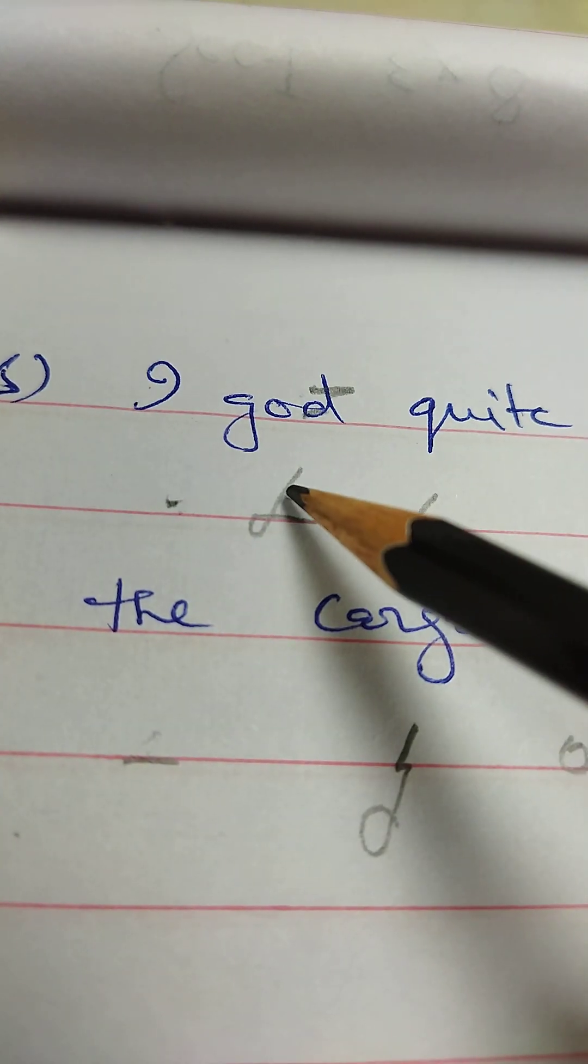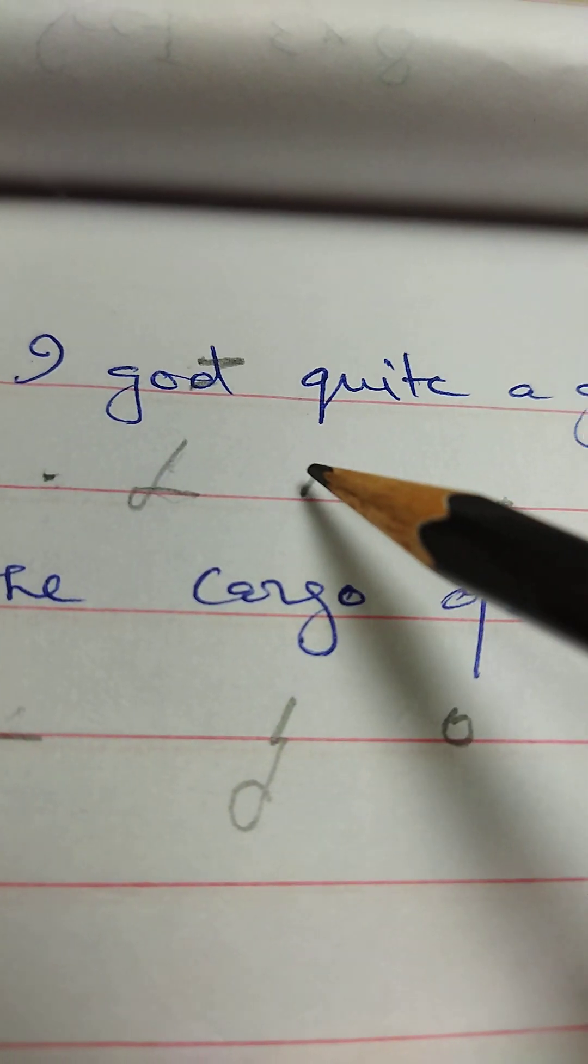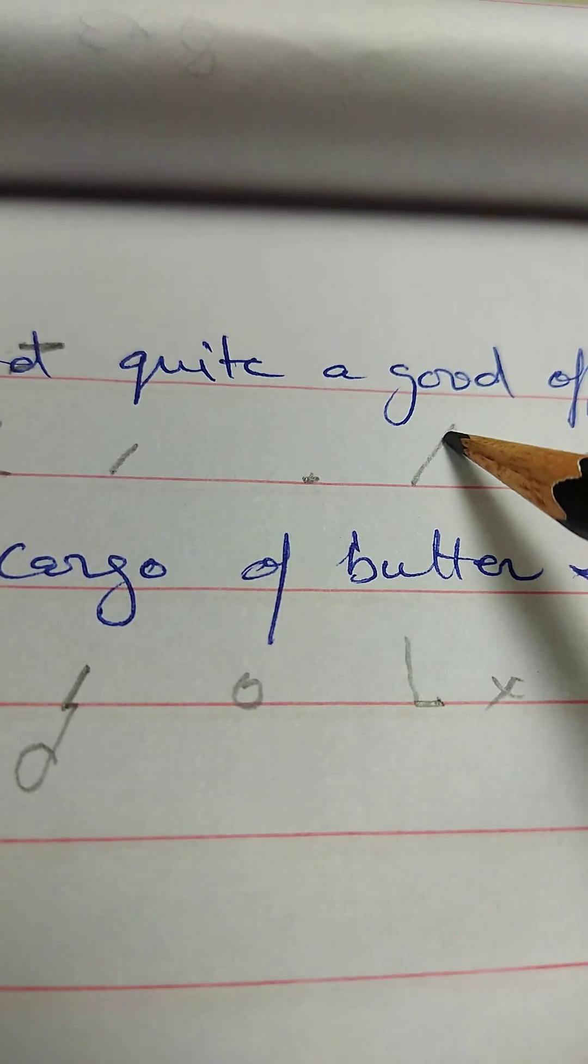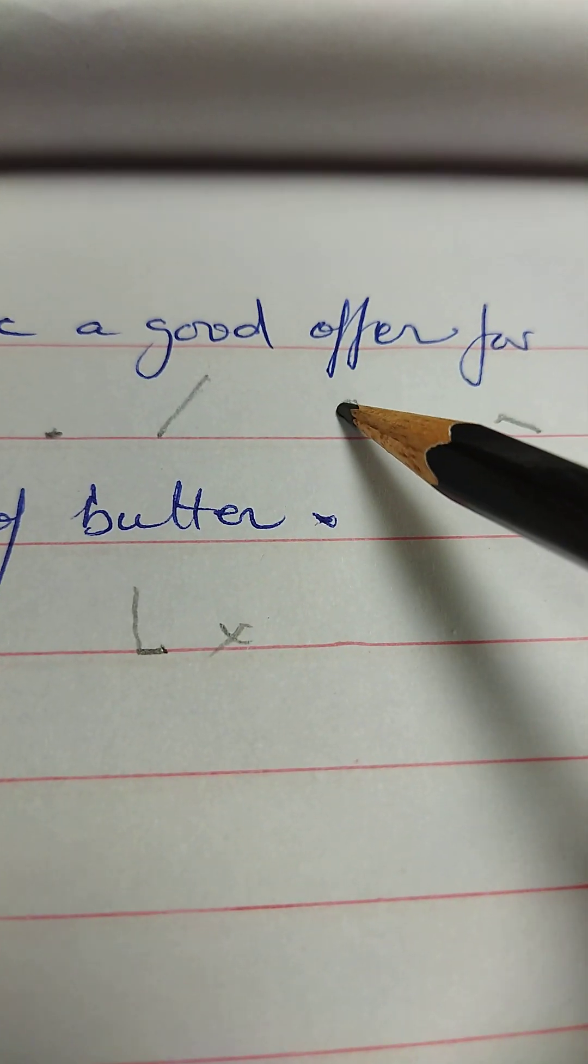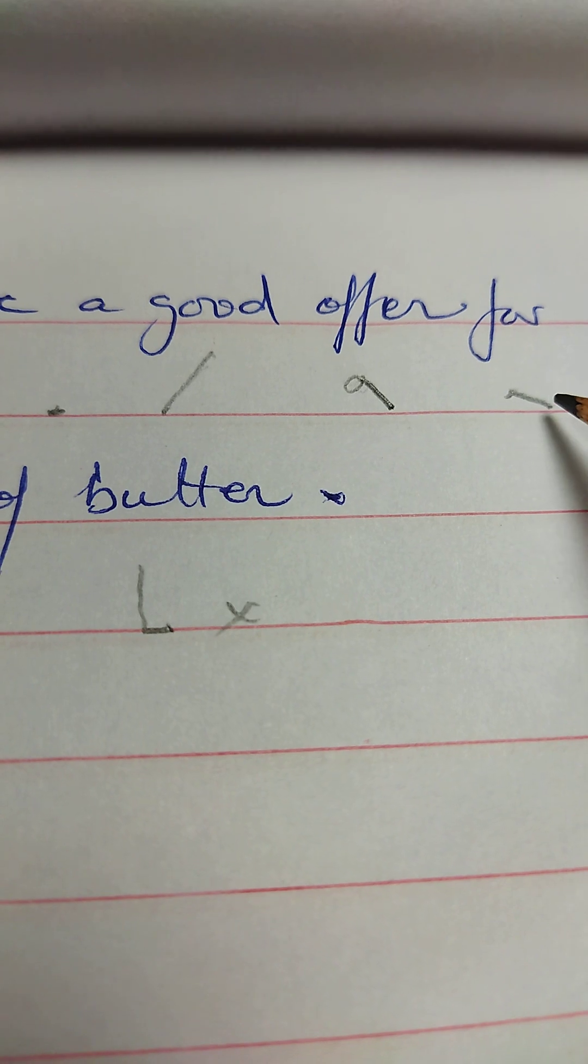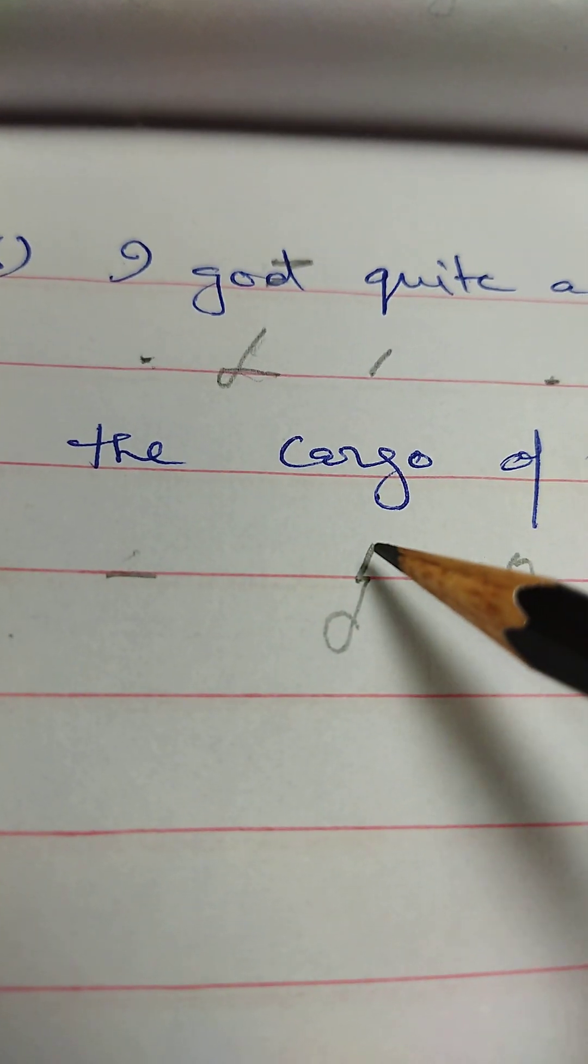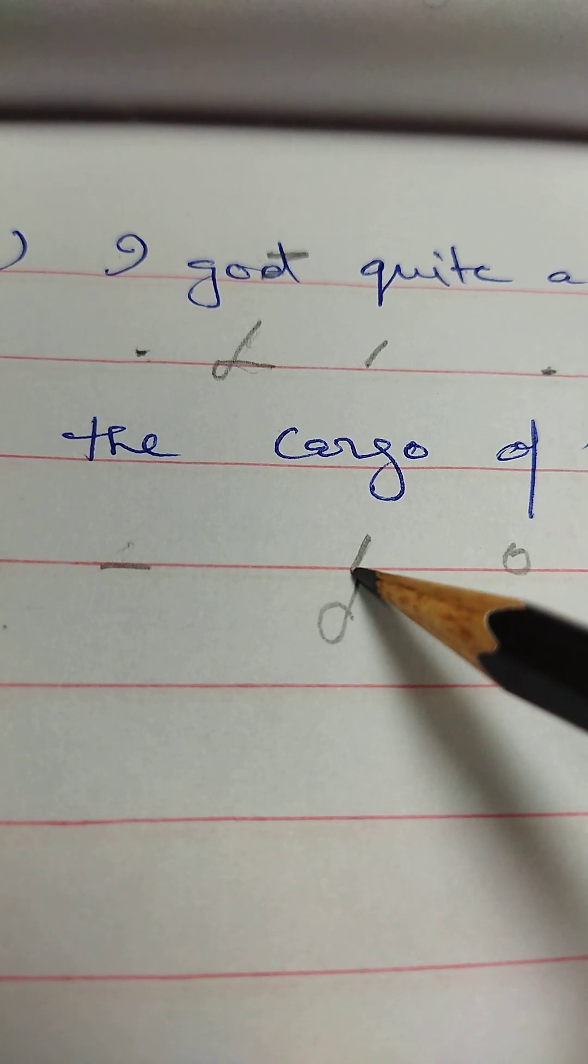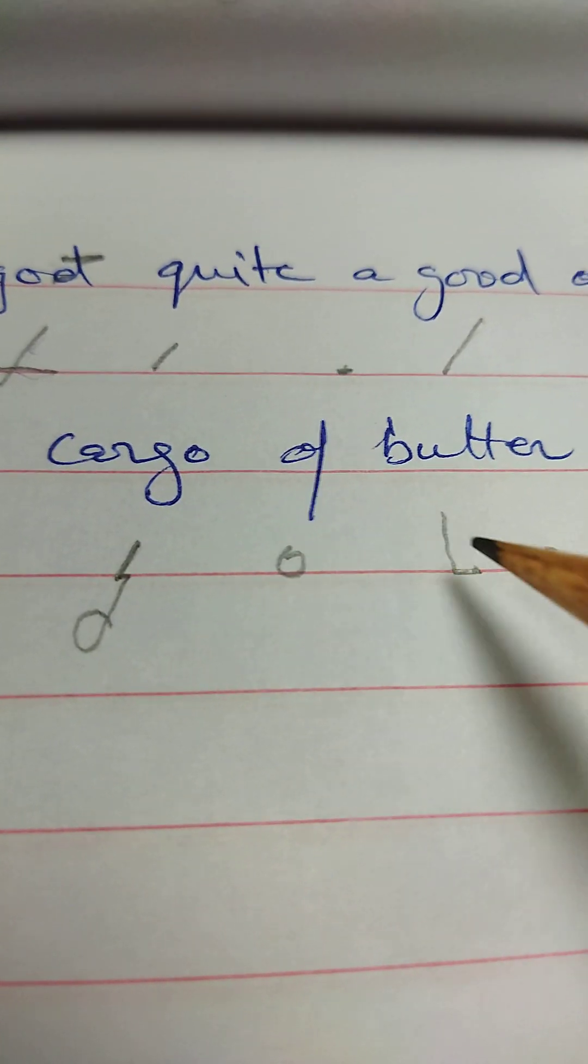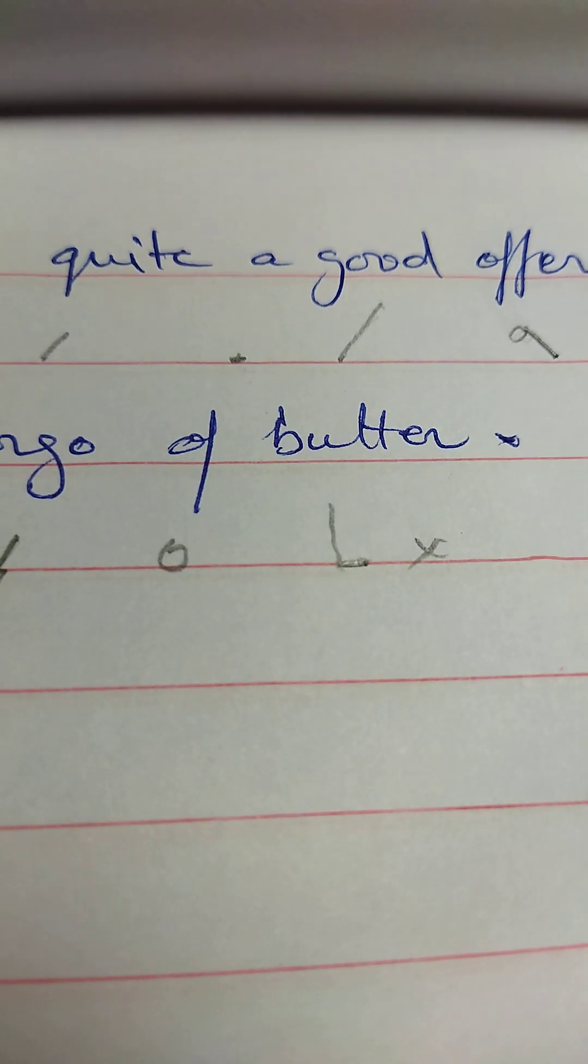I got quite a good offer for the car. The car, K is darkened. Car go, go off butter, T is darkened. Butter.